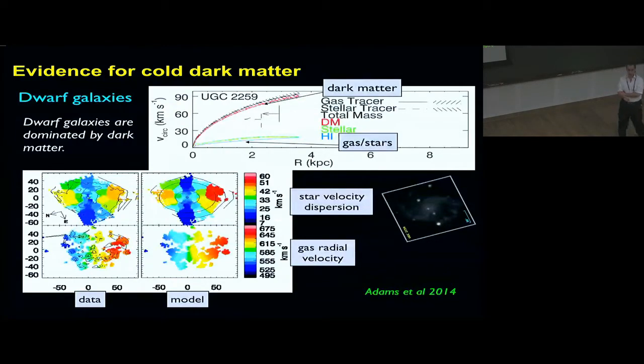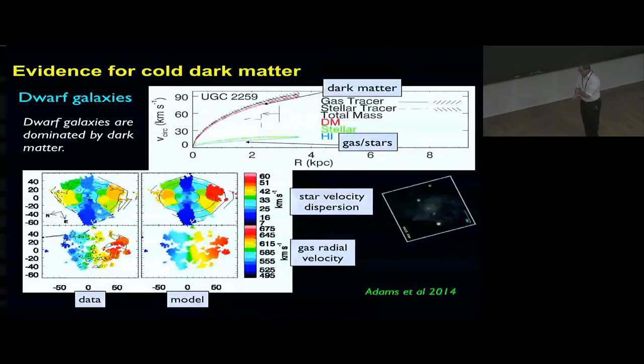John Ellis mentioned a dark galaxy made completely of dark matter for which we only have access through gravitational lensing. We don't have dynamical measurements on dark galaxies.